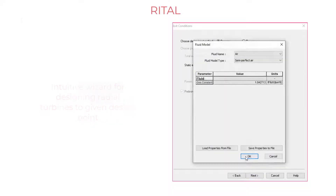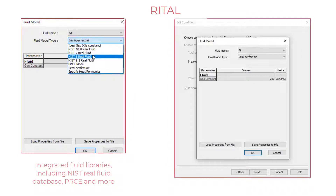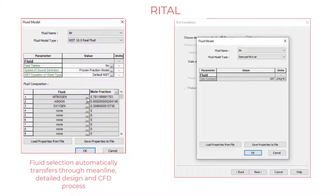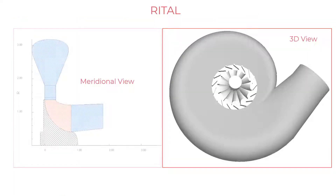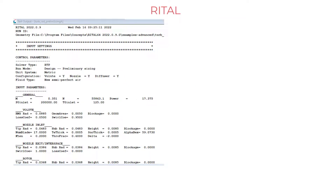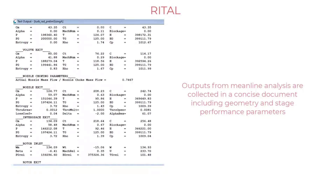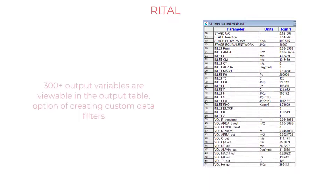You will then select the fluid. An integrated NIST fluid library allows you to utilize all different types of real fluids, including multi-constituent fluids as well as multi-phase fluids. Anytime you need help, F1 can guide you to your help. Upon completing the design, you will have a nice concise document with all of your geometric parameters as well as your performance.